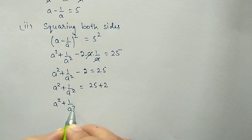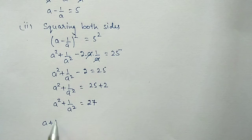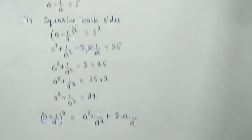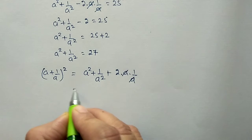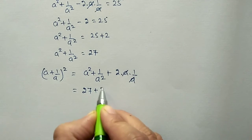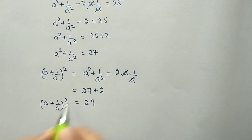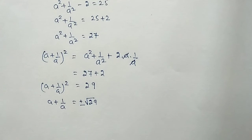Now for a + 1/a, we use (a + 1/a)² = a² + 1/a² + 2 × a × 1/a. Substituting the value 27 plus 2 gives 29. So (a + 1/a)² = 29, and taking the square root: a + 1/a = ±√29, considering both plus and minus values.